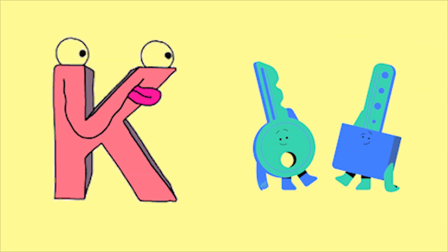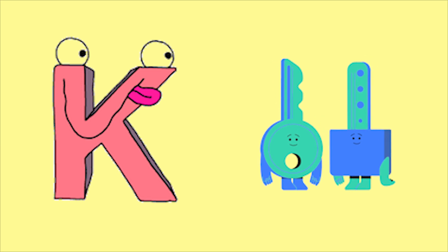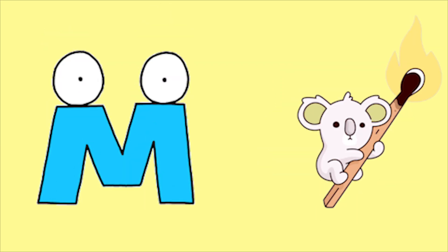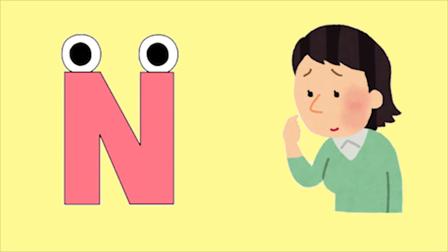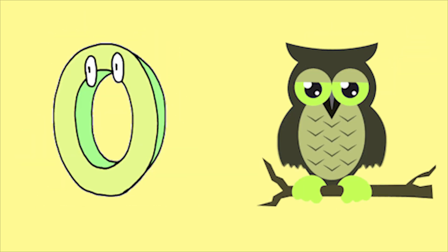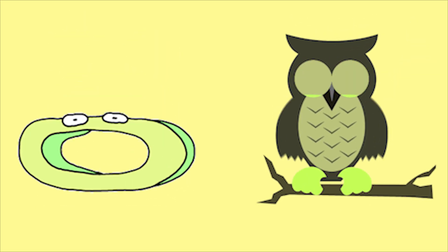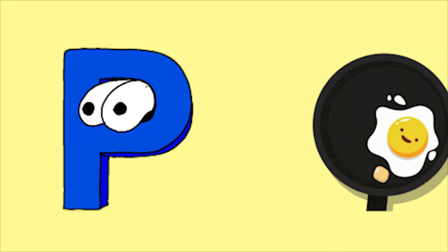K for keet, L for leaf, M for magic, N for nose, O for owl, P for pan.